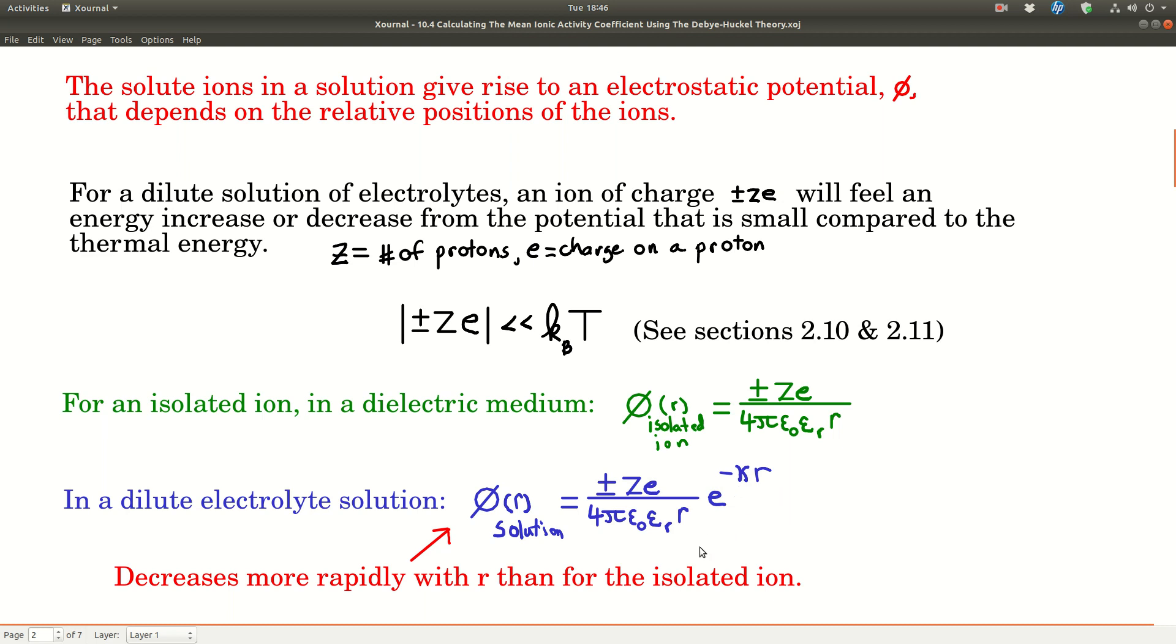The important thing is that as kappa and r increase, since kappa is always positive and r is always positive, this electrostatic potential is always smaller than the isolated ion case. It gets smaller a lot faster, exponentially, so it decreases really rapidly with r compared to the isolated ion.